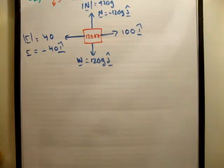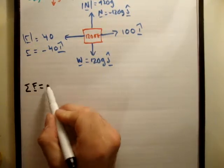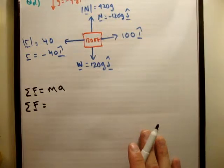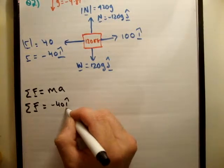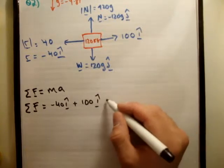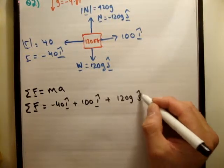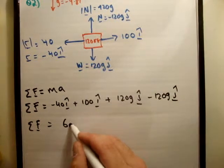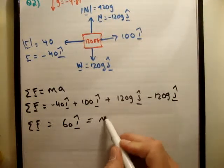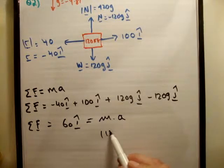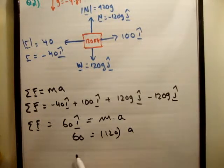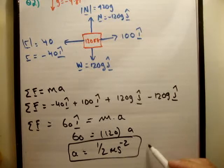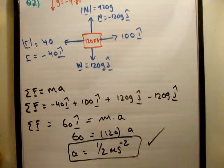Let's use Newton's second law. Sum of the forces equals ma. Sum of the forces is equal to negative 40i, positive 100i, positive 120gj, negative 120gj. So the sum of the forces is equal to 60i hat. That's equal to the mass by acceleration. And we know the mass is 120. Therefore, a is equal to half meters per second squared. That's pretty straightforward. The hard part is understanding Newton's third law, in my opinion.